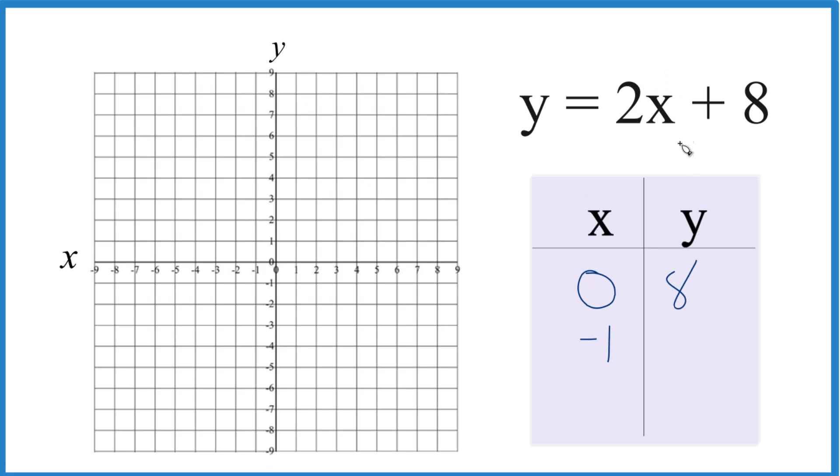So 2 times negative 1 is negative 2, plus 8, that's 6. And how about negative 4? Because 2 times negative 4, that's negative 8, plus 8, that gives us 0. So that fits nicely.